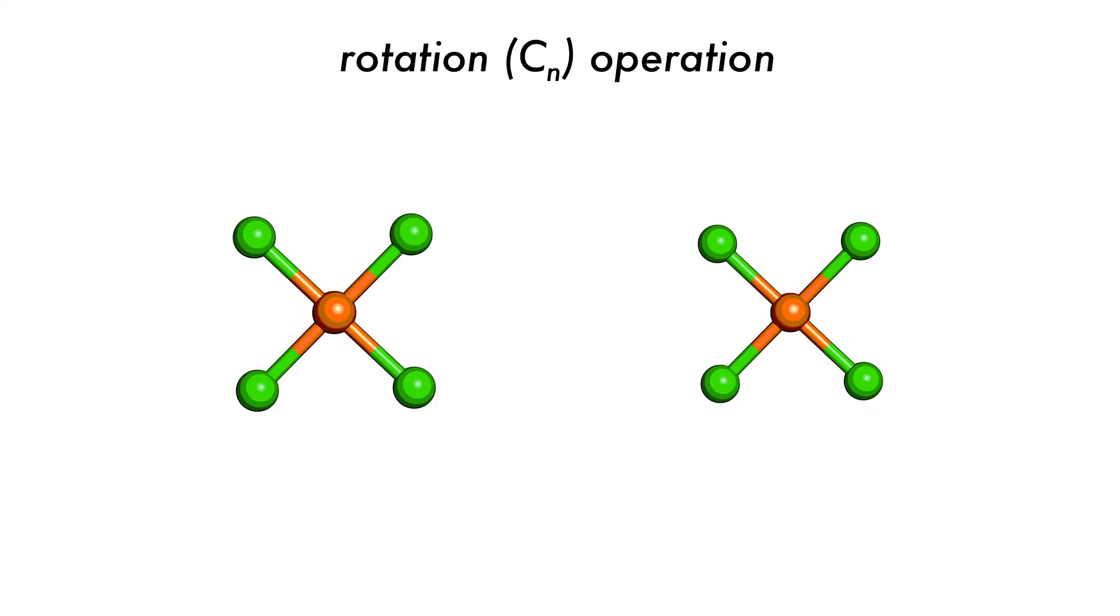The rotation operation, sometimes called a proper rotation, is a rotation through 360 degrees divided by n. It is denoted with a C subscript n where n is the number of rotations required to return the molecule to the original state. If n is 1, then this is the same as the identity and is ignored.